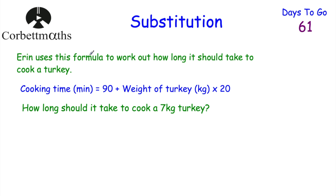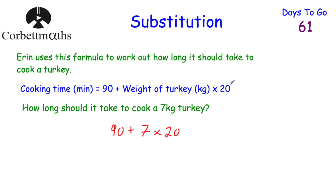Sometimes we're given substitution questions in a real-world context. Here, Aaron uses a formula to work out how long it takes to cook a turkey. The cooking time in minutes equals 90 plus the weight of the turkey in kilograms multiplied by 20. How long should it take to cook a 7 kilogram turkey? The cooking time equals 90 plus 7 multiplied by 20. So 7 times 20 equals 140, then 90 plus 140 equals 230 minutes.